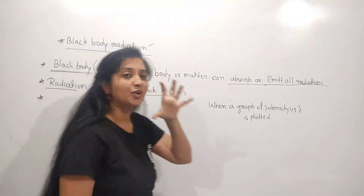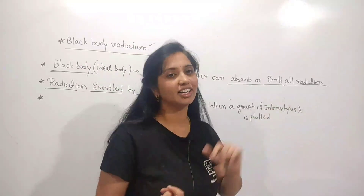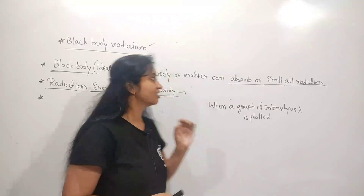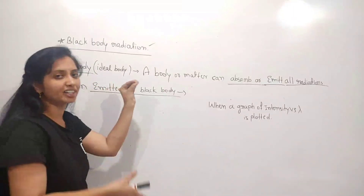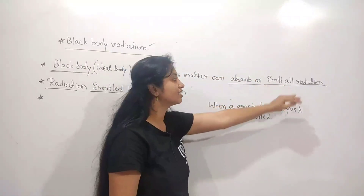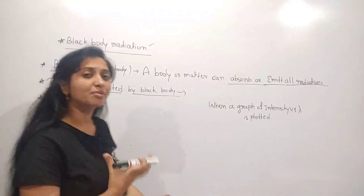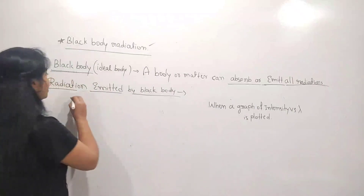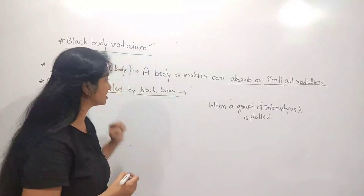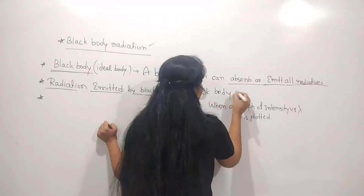What do we mean by a black body? A body which absorbs or emits all kinds of radiation is called a black body. A black body is a perfect or ideal body — a body or matter that can absorb or emit all radiation. The radiation emitted by a black body is called black body radiation.